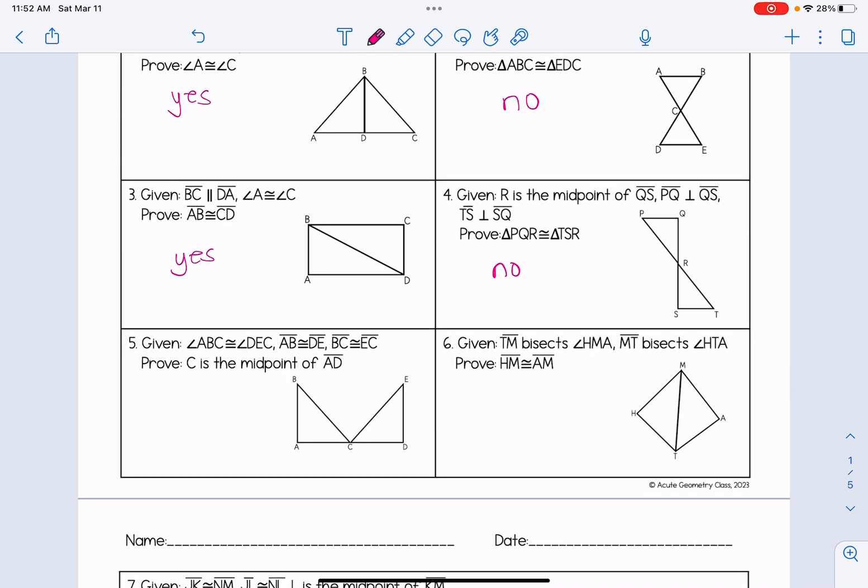Number five, the proof looks a little different here. It says C is the midpoint of AD. So this is not about congruent triangles. So yes, we will use CPCTC. And finally, for the last one, same thing, not about congruent triangles. So we will use CPCTC in that proof.